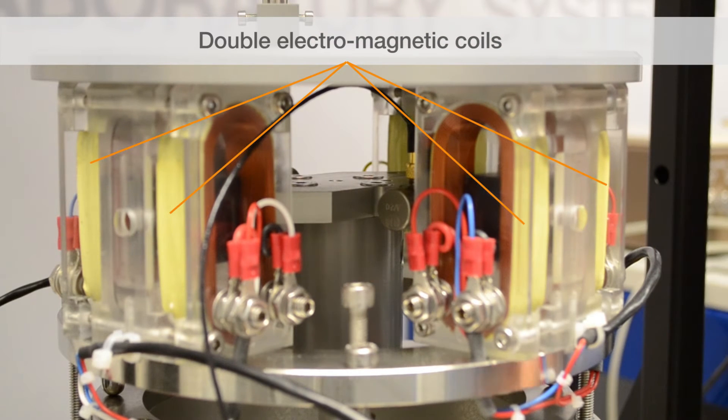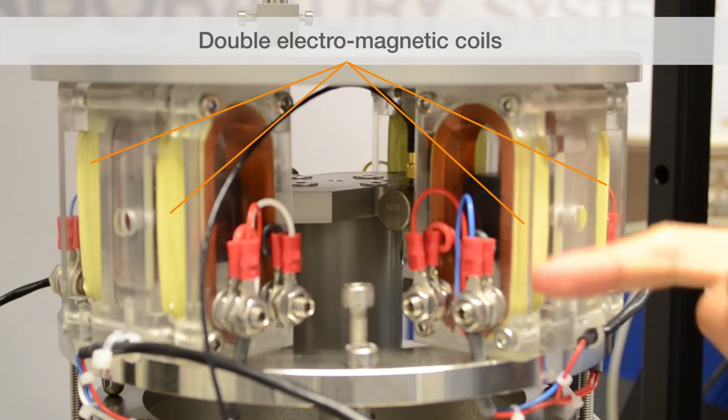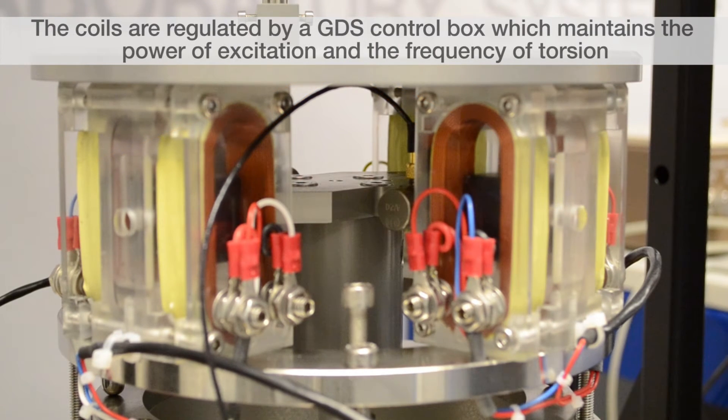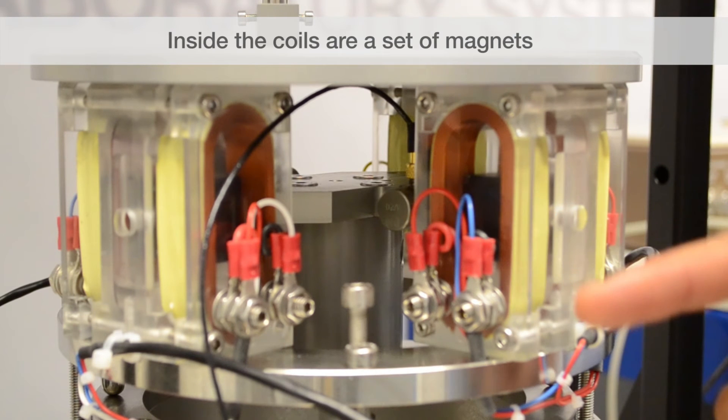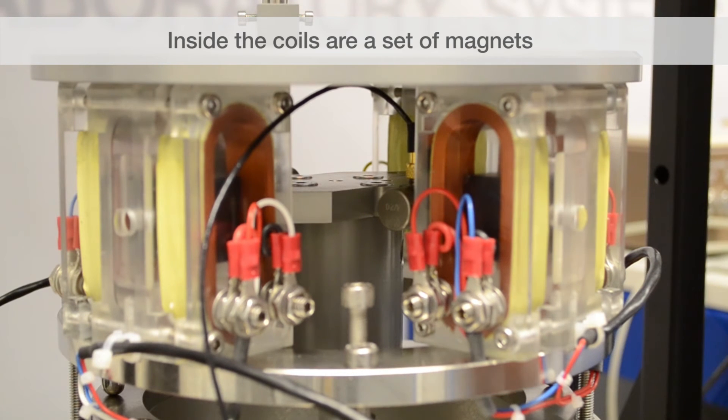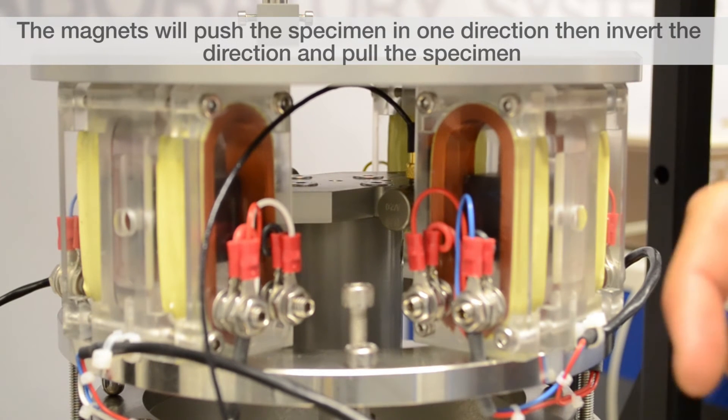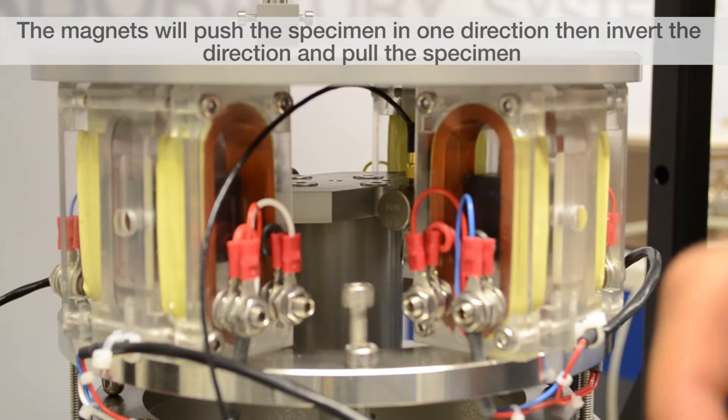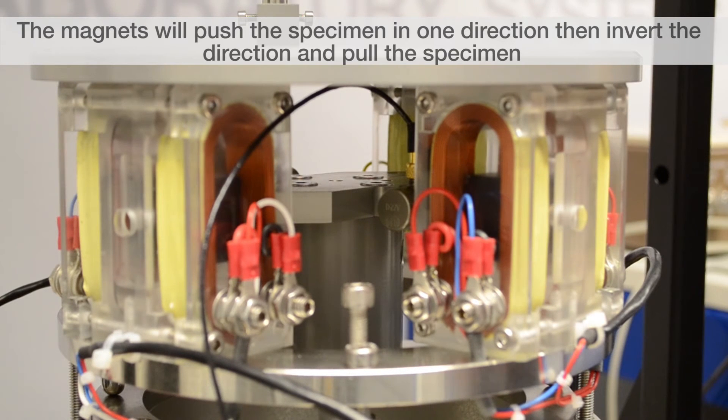What was suggested for this was to develop a set of electromagnetic coils that will be regulated by one of our control boxes in terms of how much power they receive and at what frequency they change their polarity. Inside the coils we will find a set of magnets that will react to the polarity of the coils and by doing so will basically push the sample in one direction and then we'll invert the direction and pull it.